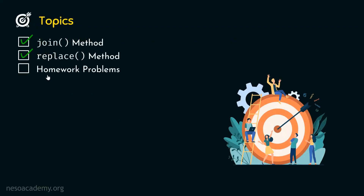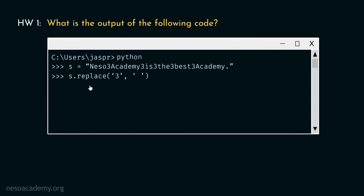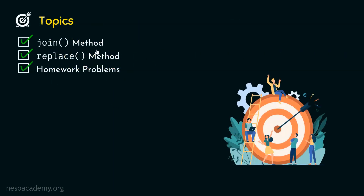Let's now see some homework problems. The first problem is: what is the output of the following code? Try it on your own first, then run it in your command prompt. The second problem: suppose a list contains two integers, one and two — can we use join method to join these integers without any space? Answer yes or no. We have understood join method, replace method, and seen some homework problems. Thank you for watching, I'll see you in the next one.